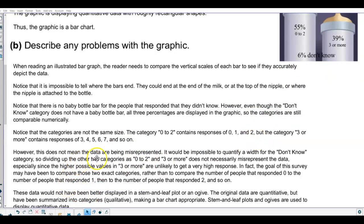However, this does not mean that the data are being misrepresented. It would be impossible to quantify a width for the don't know category, so dividing up the other two categories as 0-2 or 3-more does not necessarily misrepresent the data, especially since the higher possible values in 3 or more are unlikely to get a very high response.